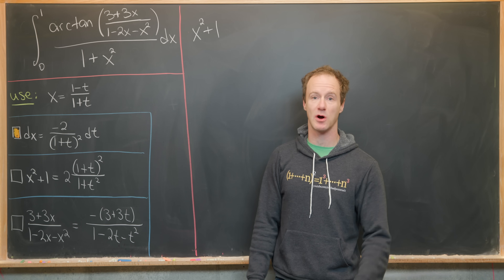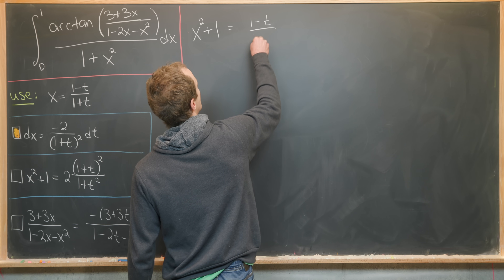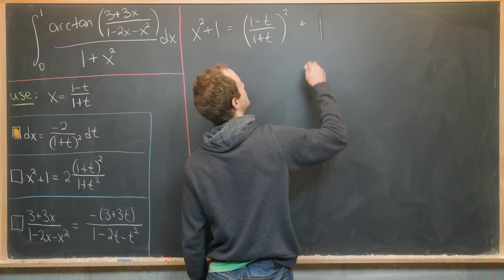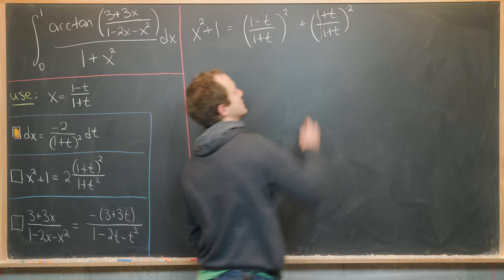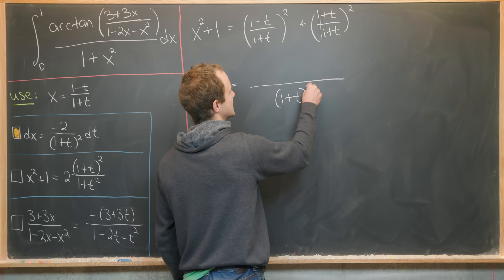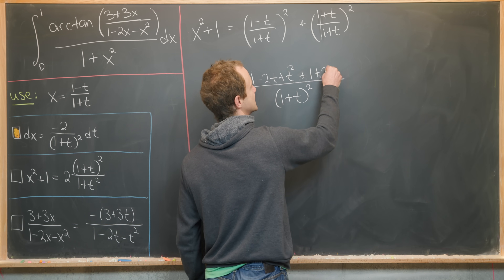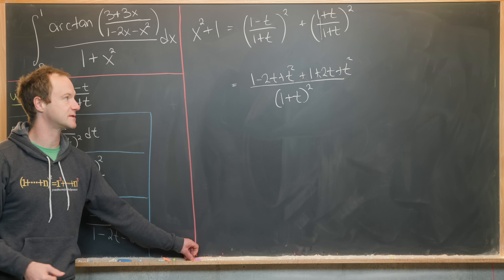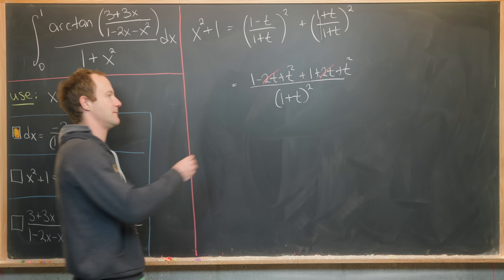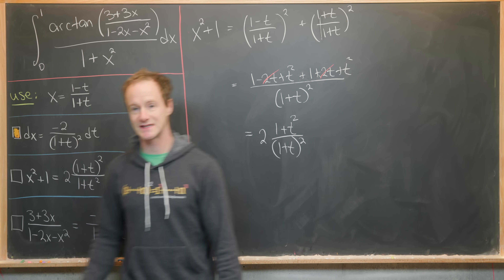Next we compute the x² + 1 term under the substitution. Substituting x = (1 - t)/(1 + t), we get ((1 - t)/(1 + t))² + 1, then give the +1 a common denominator of (1 + t)². Combining the fractions, the numerator becomes (1 - 2t + t²) + (1 + 2t + t²). The ±2t terms cancel, leaving 2(1 + t²), so x² + 1 = 2(1 + t)²/(1 + t)².